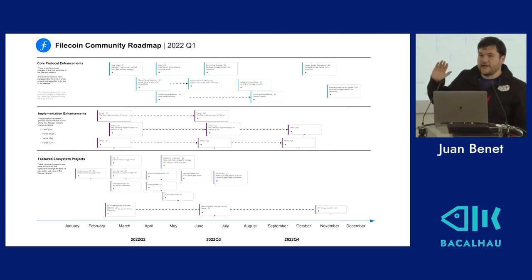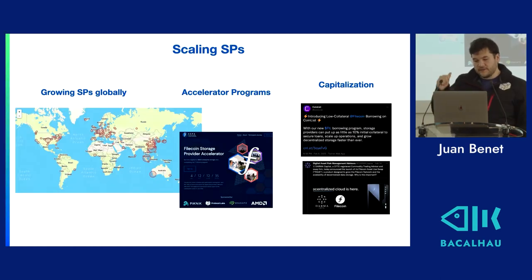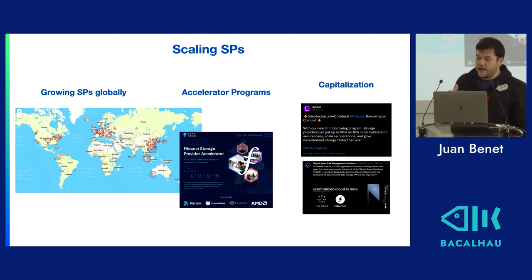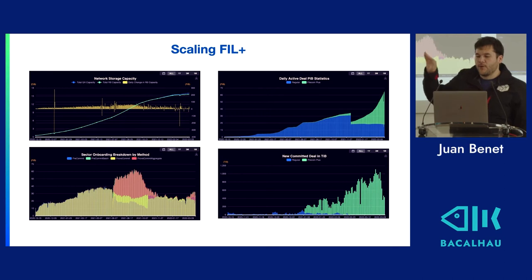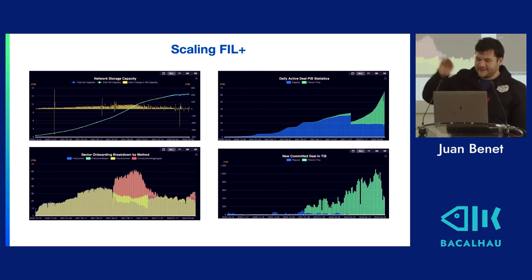I'm going to assume a lot of familiarity with Filecoin already and just blaze through this to page it into your mind. This is the community roadmap — there's a lot of people working on a ton of things here. There's an enormous amount of growth in the storage provider world, with lots of SPs scaling up their operations in both capacity and storage. You can see the growing amount of useful storage with Filecoin Plus. My favorite graph right now is new committed deals in terabytes, which just crossed over a petabyte in the last week.